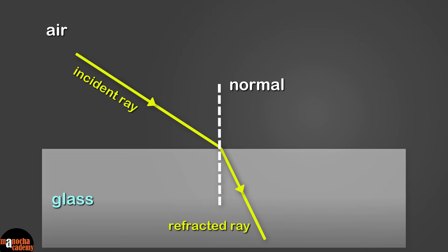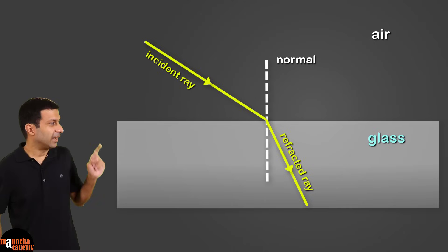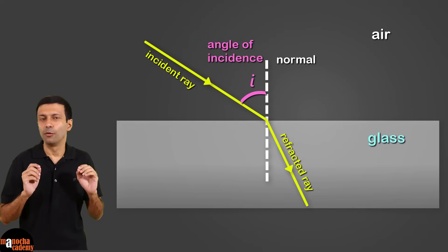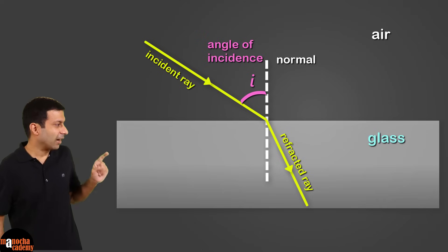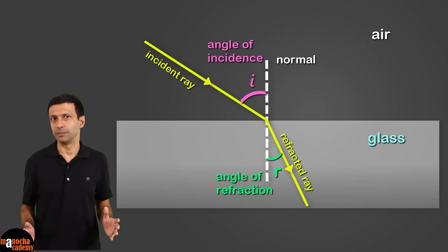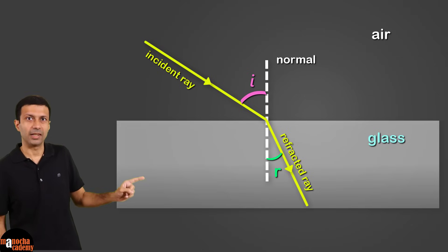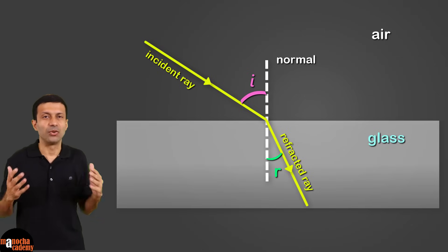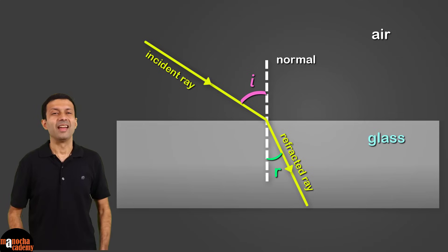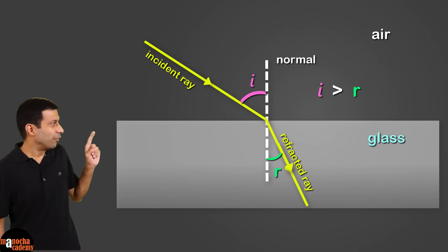The light ray in the second medium is called the refracted ray. Can you see the incident light instead of going straight is bending towards the normal? The angle the incident ray makes with the normal is called the angle of incidence. And the angle the refracted ray makes with the normal is called the angle of refraction. When light is traveling from air to glass like here, how are these angles related? That's right, angle of incidence is greater than the angle of refraction.